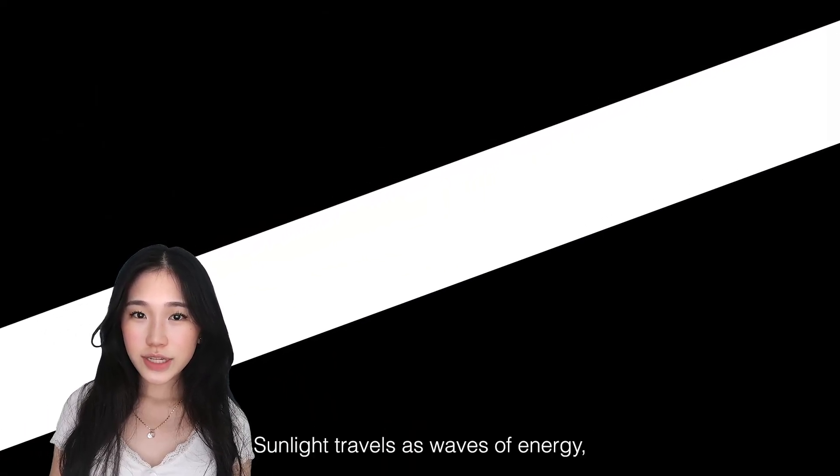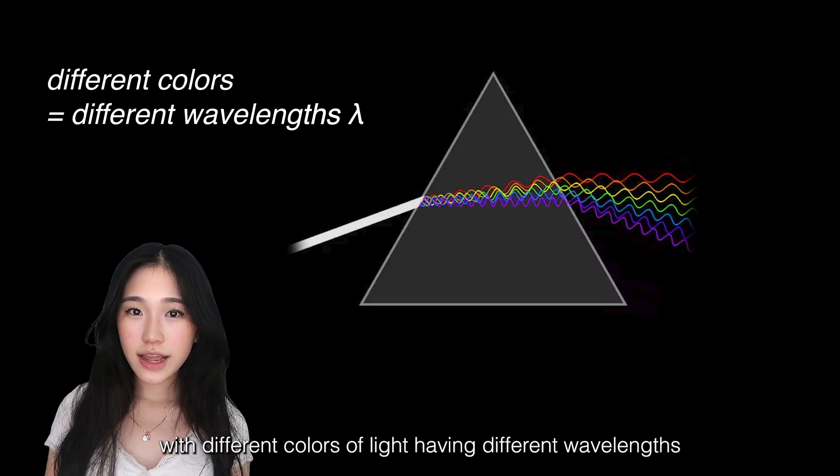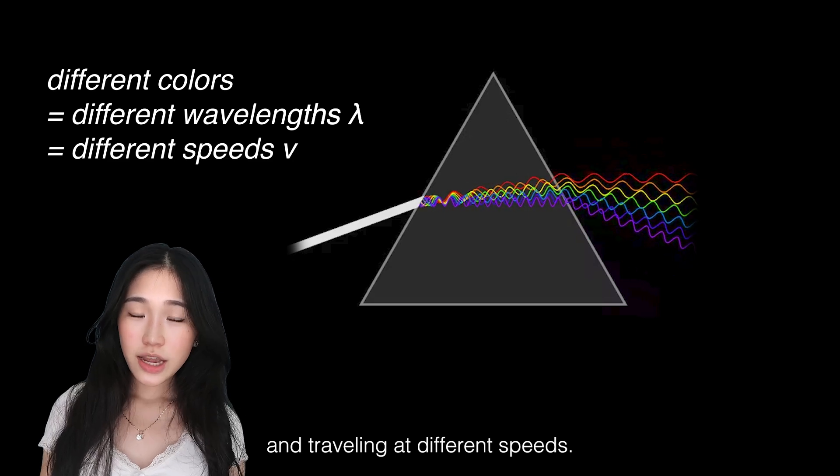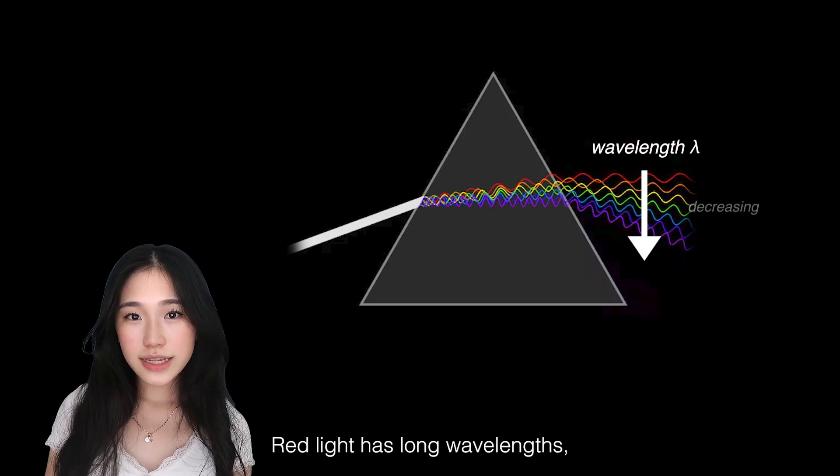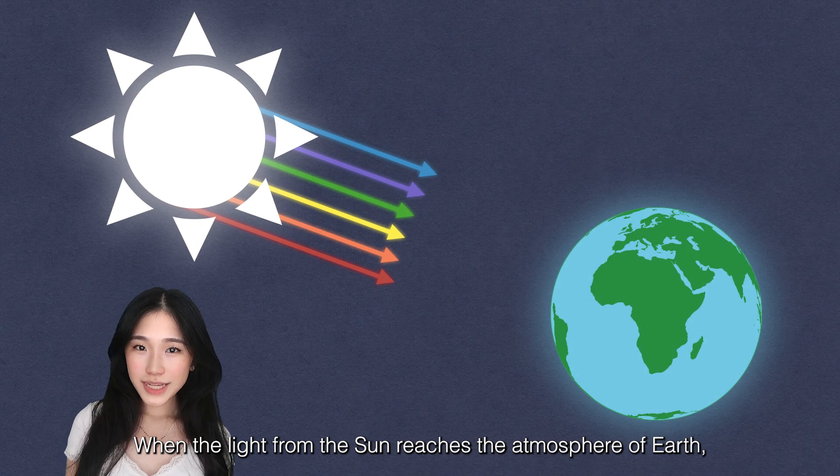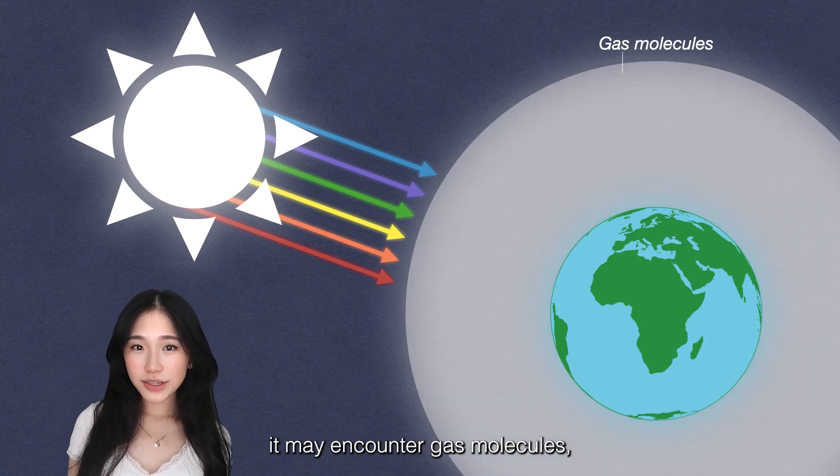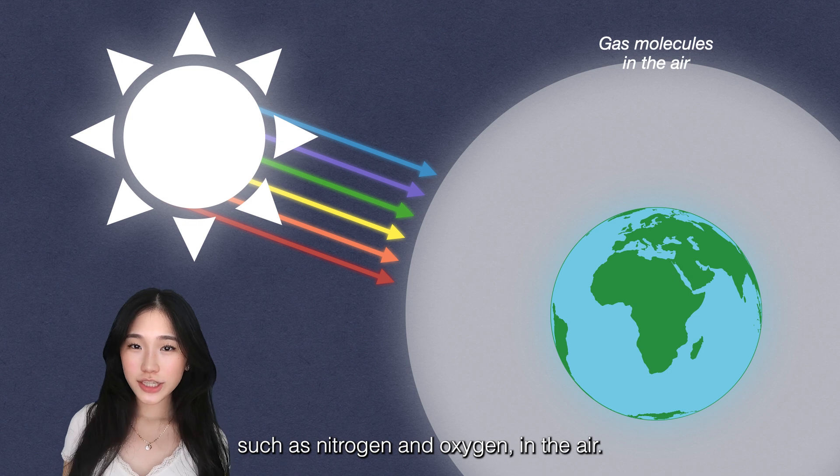Sunlight travels as waves of energy with different colors of light having different wavelengths and traveling at different speeds. Red light has long wavelengths while blue light has short wavelengths. When the light from the Sun reaches the atmosphere of Earth, it may encounter gas molecules such as nitrogen and oxygen in the air.